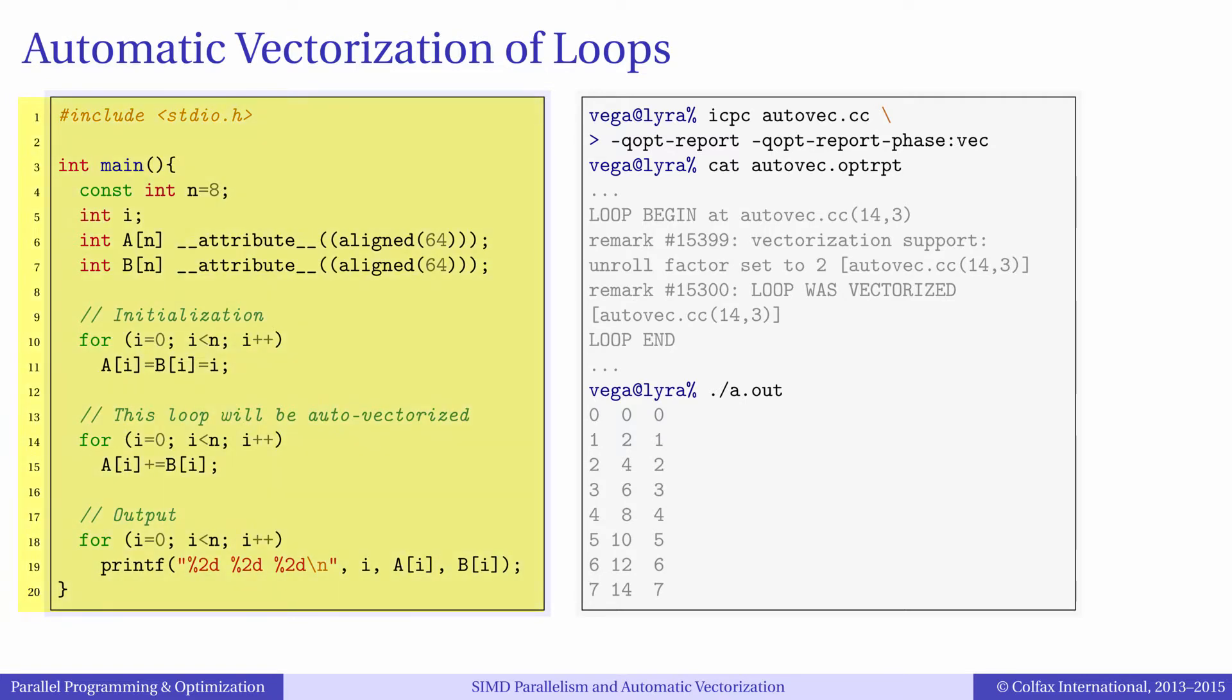The code listing in C that you see contains the code for adding B to A, which we have already seen in multiple implementations. This time we will compile this code with the Intel C++ compiler.